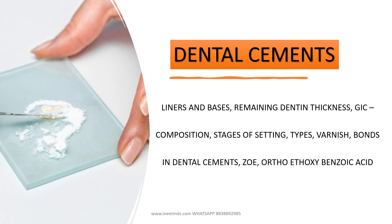Next is dental cements. You should be aware of all dental cement names, the difference between liners and bases from a thickness perspective, what remaining dental thickness is, GIC composition and setting, types of GIC, what varnish is and its function, types of bonds in different cements — chemical bond, mechanical bond, mechanochemical bond, micromechanical. Then zinc oxide eugenol cement, its applications, and the replacement for eugenol which is ortho-ethoxybenzoic acid.